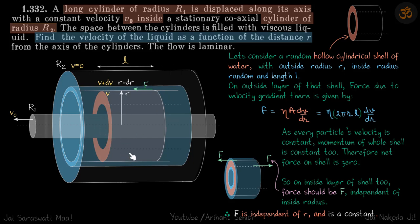This is a problem on viscous force. We must know the formula: viscous force is given by F = η·A·(dv/dr), where η is viscosity, A is the contact area, and dv/dr is the velocity gradient where that contact is made.